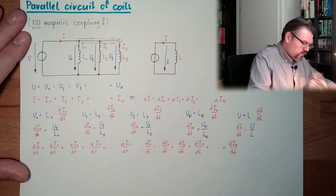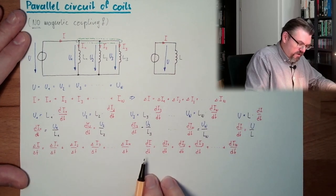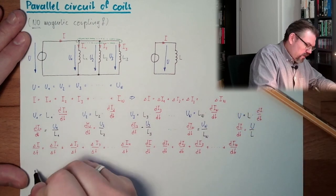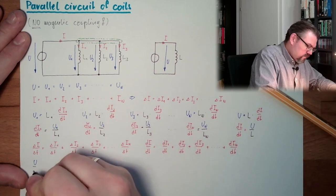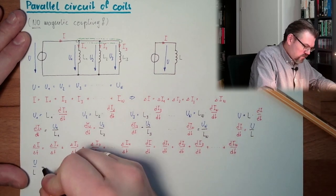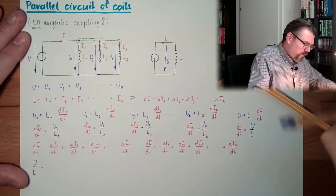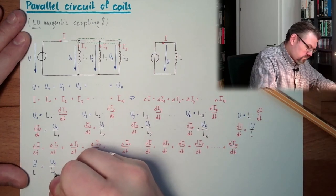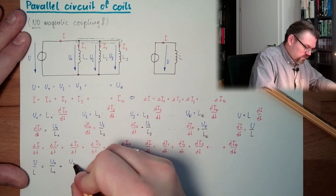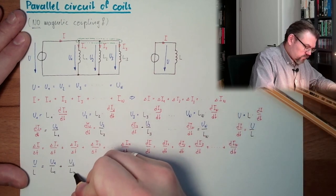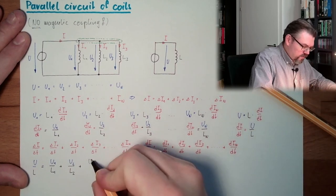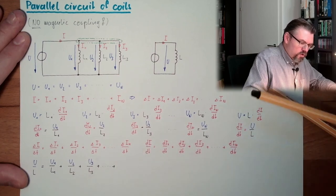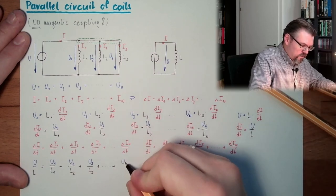All right, so let's write this here. We have here U divided by L, this is this part, this is U divided by L, and now equals this part, U1 divided by L1 plus U2 divided by L2 plus U3 divided by L3 plus, and so on, UN divided by LN.